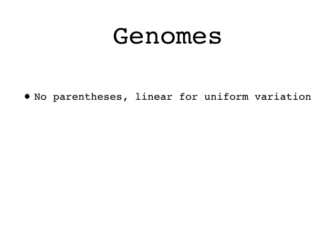How should we make random changes to Push programs during evolution? One nice approach is to make the changes not to the programs themselves, but instead to what we call genomes, which are programs without parentheses. This makes it easy to perform uniform variation, meaning that everything is equally likely to be mutated or included in a recombination. We translate genomes into programs only when we need to execute them for testing; aside from that, the evolutionary process operates on genomes.